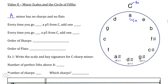And therefore, we can simply rearrange the circle of fifths to be centered on A minor rather than C major. And from that, every other aspect of the circle of fifths works identically. For example, every time we go up a perfect fifth — rather than from C major, from A minor instead — we add one sharp to the key signature.